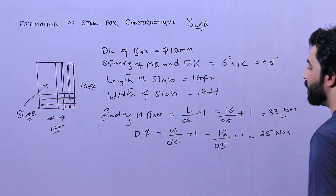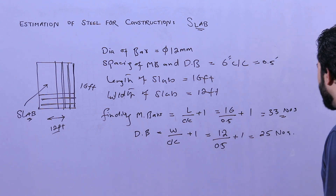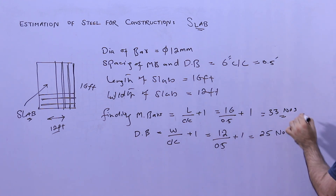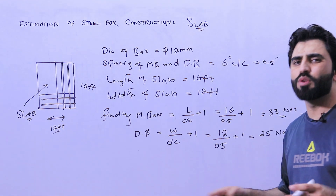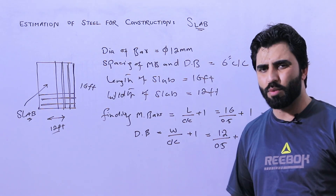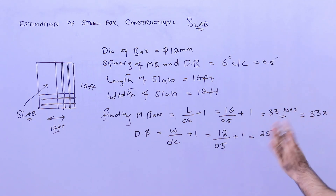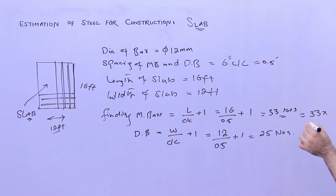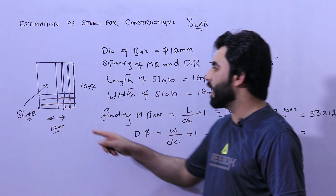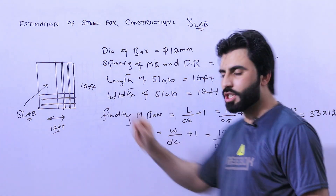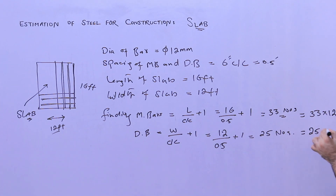Now let me find the total length of main bars and distribution bars. For main bars: 33 numbers multiplied by the length of each main bar, which is 12 feet. We can ignore the concrete cover since it is only about 1 to 1.5 inches — these are ignorable points. For distribution bars: 25 numbers multiplied by the length of each distribution bar, which is 16 feet.